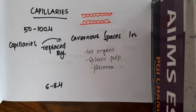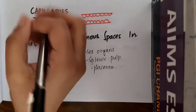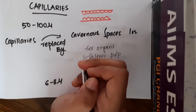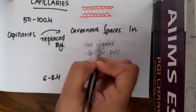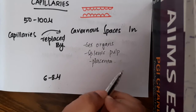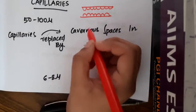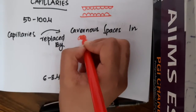These capillaries begin after the transition zone of 50 to 100 microns beyond the pre-capillary sphincters. In some areas, capillaries are replaced by cavernous spaces, which are nothing but dilated spaces.